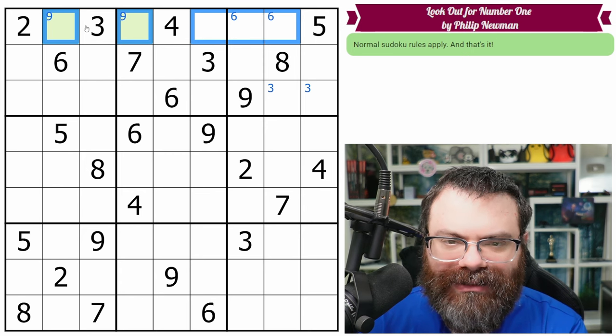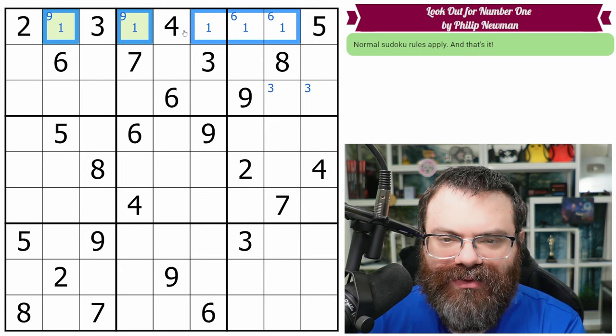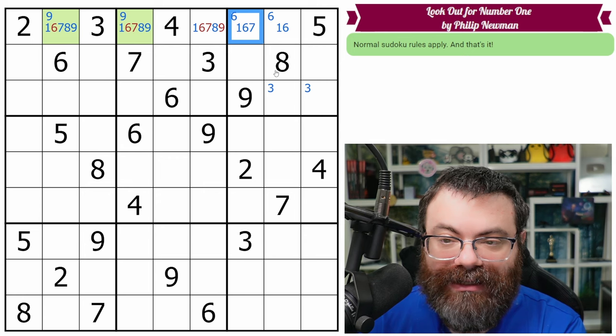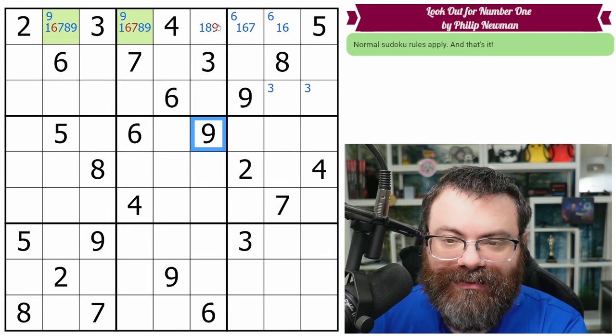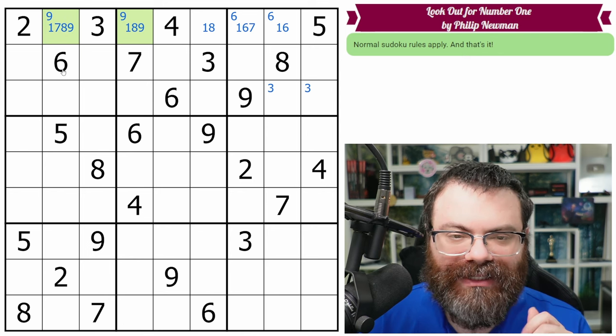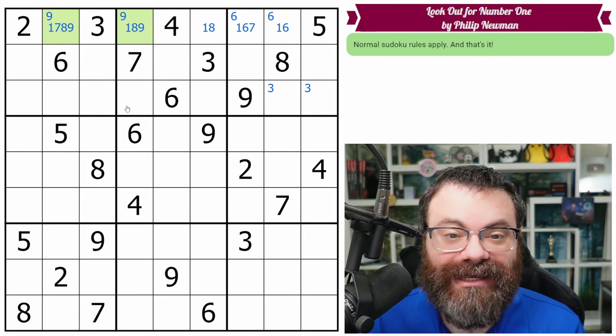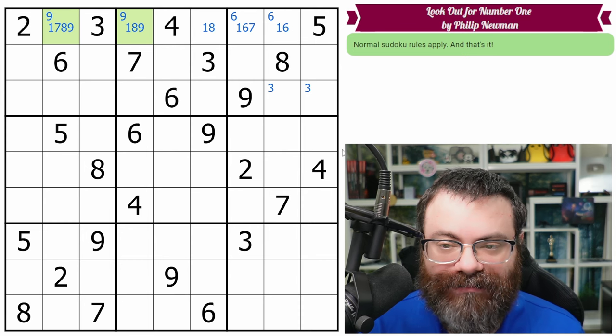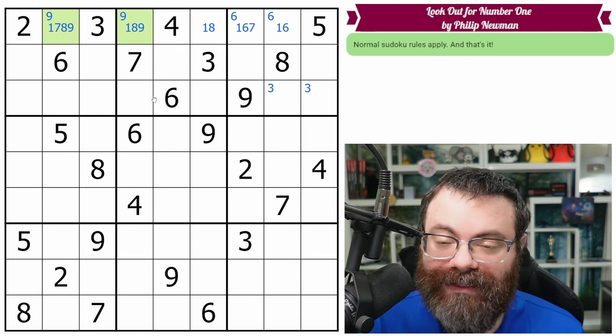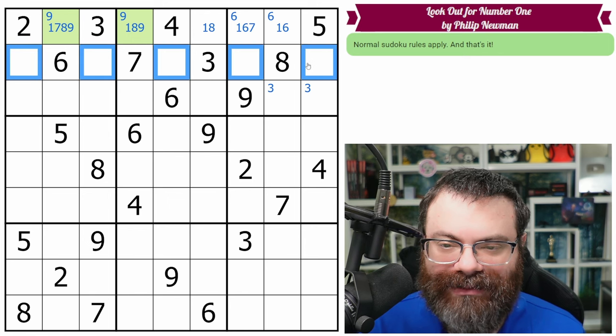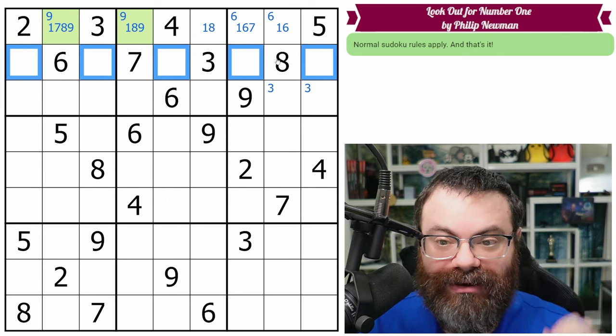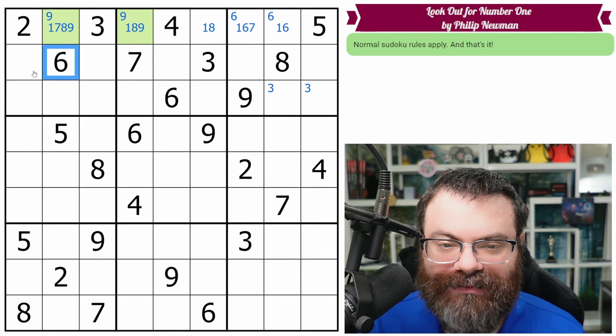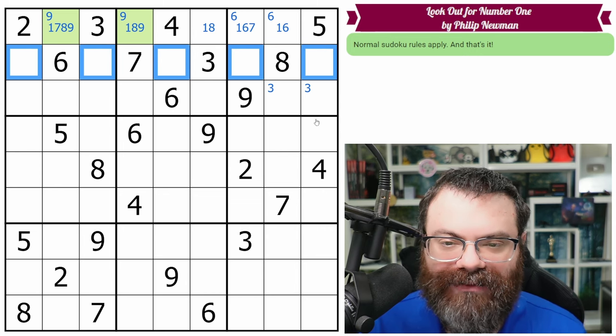I'm just going to pencil the entire row, and then we'll clean it up. So we need a 1, we have 2, 3, 4, 5, we need 6, 7, 8, 9. This sees the 7, 8, and 9. This sees 8 and 9, as we expected. In this puzzle, because I know what we're looking for, I am going to leave cells that have 4 possibilities or less. I don't want to miss what we're looking for here.